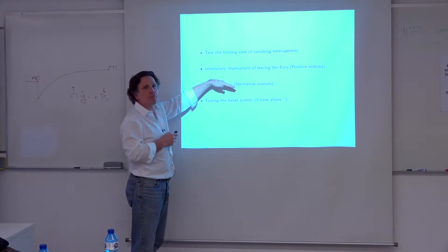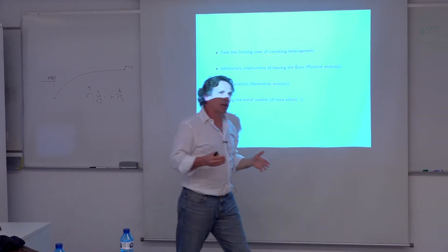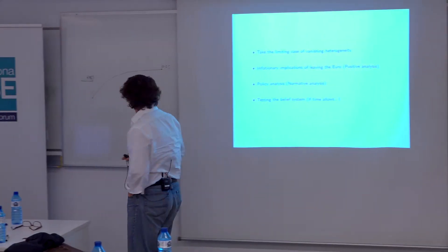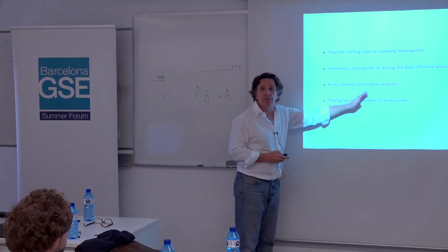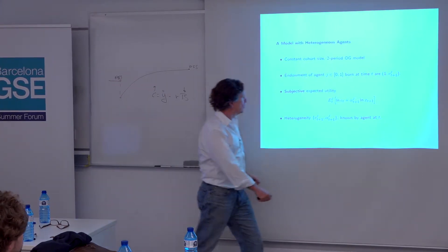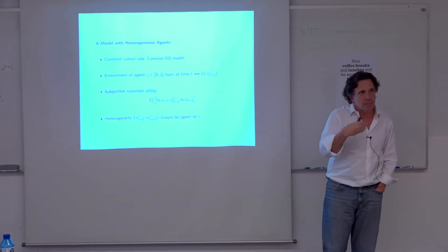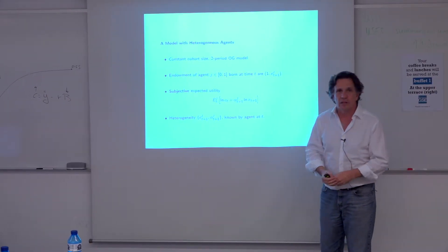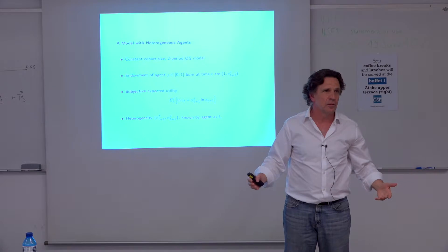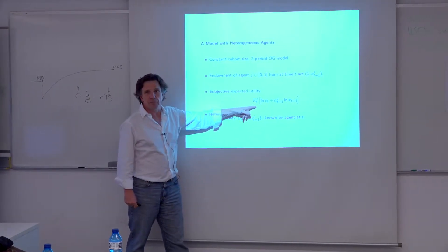I will do positive analysis and normative analysis — I will be computing welfare gains of doing different things. Once I already got into the wilderness, I want to go full mountain. I'll also show you, if time allows, how the tests work and how they perform in equilibrium. So let me start: constant cohort size, two-period OLG model — that's Gaetano's world. Endowment is one in the first period, and then some number in the second period which is known when you're born. Everybody's alike in the first period but can have a different endowment in the second period. And then I'm going to have expected utility — the whole point is which probability distribution I put in there.